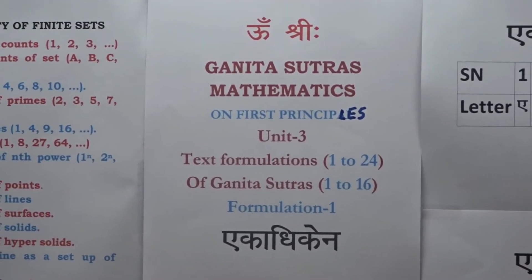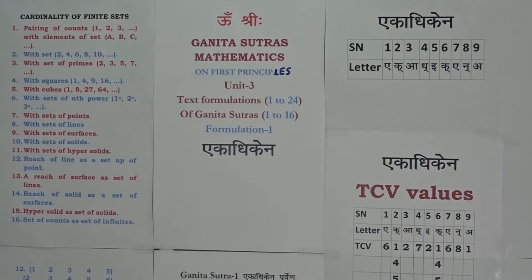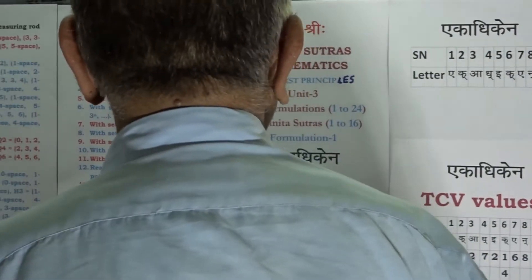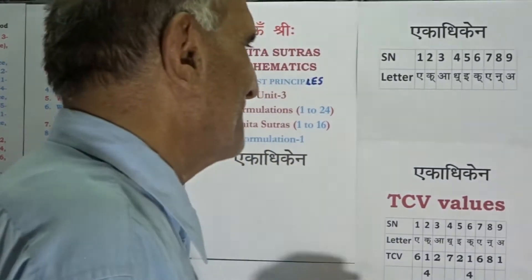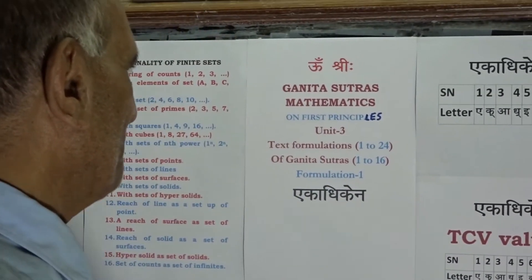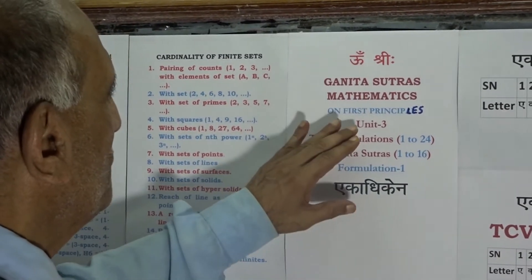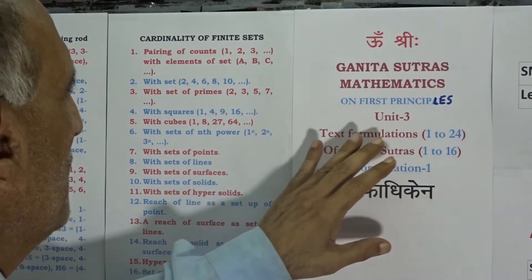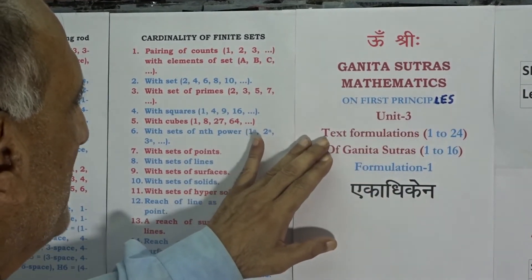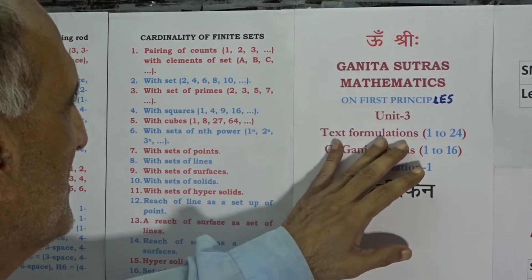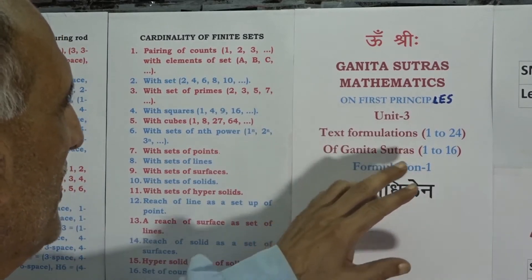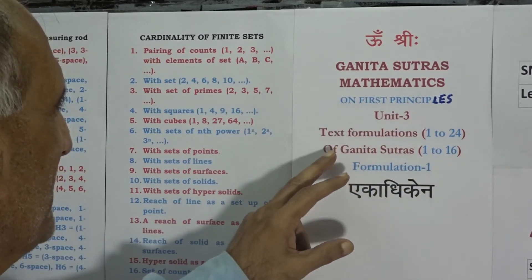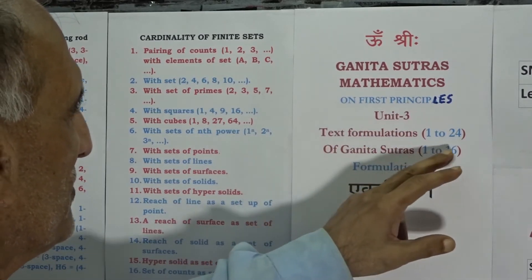Welcome to Dunita Sutras Mathematics on first principles. Today we are taking up Unit 3. In this Unit 3 we will be focusing upon text formulations. As we know, there are 1 to 24 formulations of the text of Ganita Sutras 1 to 16.